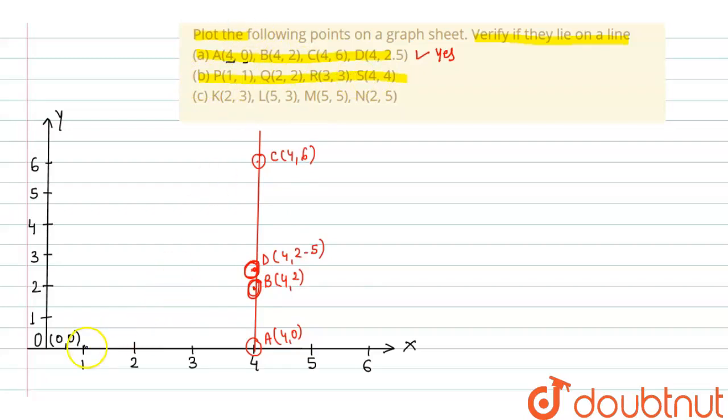Now, P(1,1) means this point will be 1,1. It is P. Q(2,2) means this point, Q(2,2) and R(3,3) means this point, R(3,3) and last S(4,4) means this one will be 4,4.